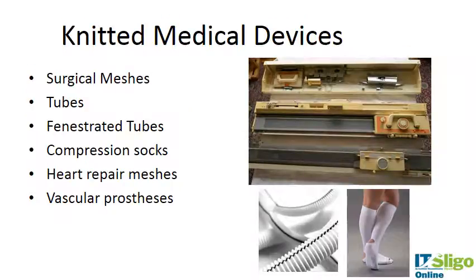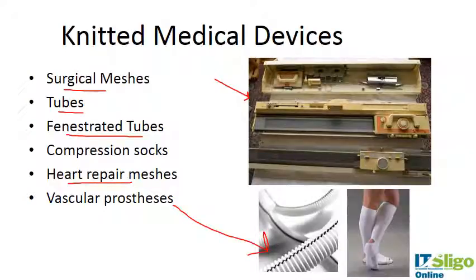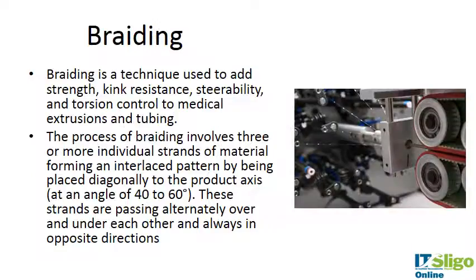This is a traditional knitting machine — I couldn't find one specific to medical devices. The types of medical devices that would be knitted include surgical meshes, tubes, fenestrated tubes for breathing, vascular grafts, vascular prostheses, heart repair meshes — where a mesh may be used to help repair damaged heart tissue — and things like compression socks.